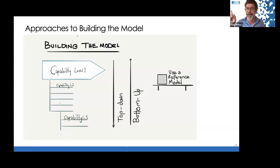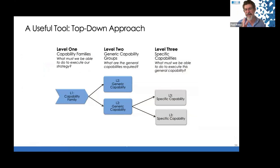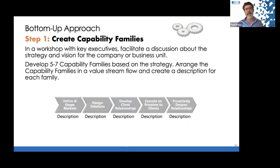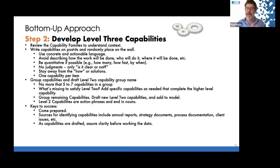Look up reference capability models for the type of company you're dealing with — there are many out there. Do not copy and paste them; use them as a reference model, because you want the conversations and the dialogue. You can build top-down starting at level one, or bottom-up starting at level three — it's perfectly fine to work in both directions at once. These details are in the business capability card in the BIDABOK, and we have cards and canvases for this kind of work.